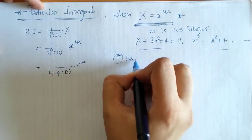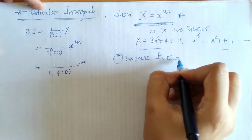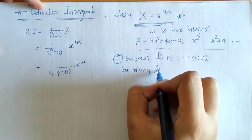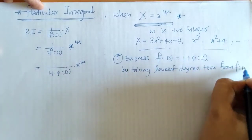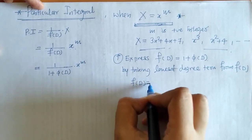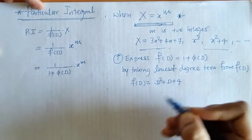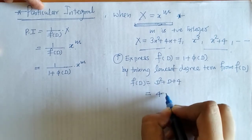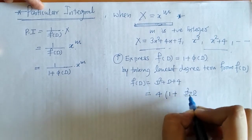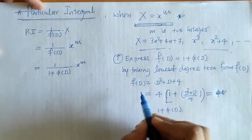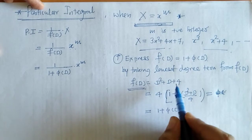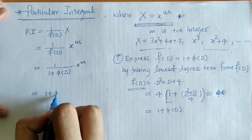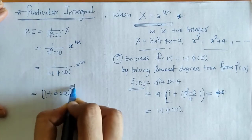So we express f(D) as 1 plus φ(D) by taking the lowest degree term outside. Then we have to take this 1 plus φ(D) into the numerator so that it is now with a negative index.